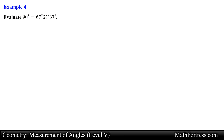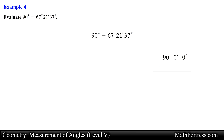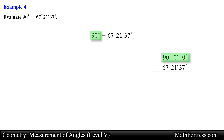Evaluate 90 degrees minus 67 degrees 21 minutes 37 seconds. We are given two angle measures and asked to subtract them. Similar to addition, we subtract angles written in degrees-minutes-seconds by aligning the measures in a vertical column and subtracting the seconds, minutes, and degrees. Before we can do this, we have to rewrite 90 degrees so that it includes minutes and seconds. Initially 90 degrees has 0 minutes and 0 seconds, and since we cannot subtract 37 seconds from 0 or 21 minutes from 0, we need to rewrite the first angle.